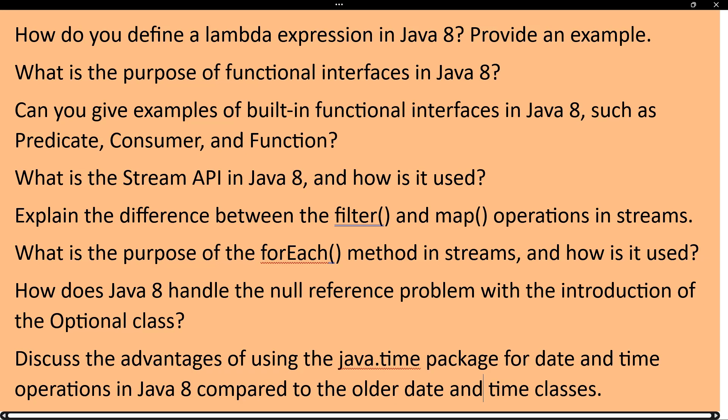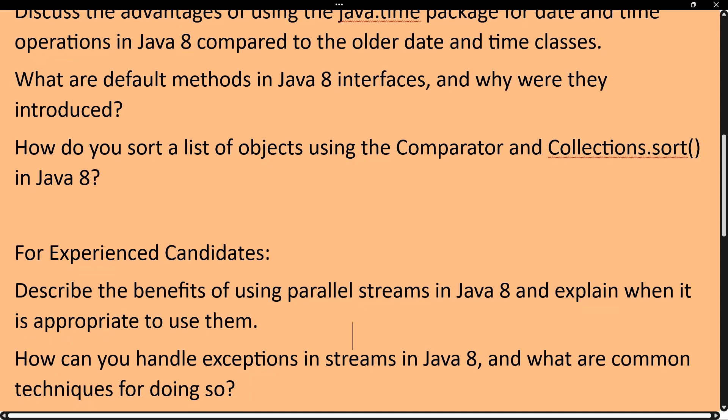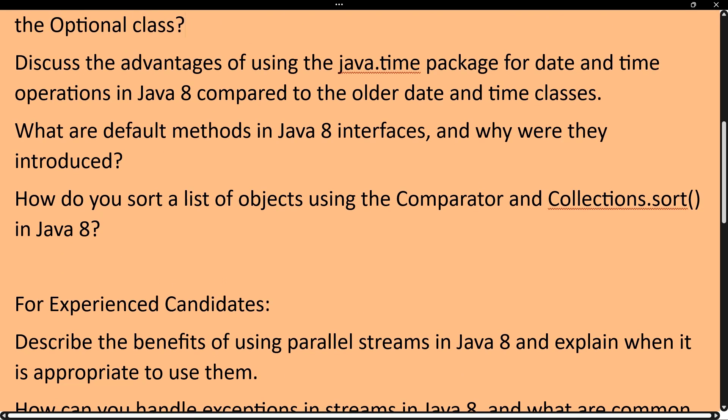The next question is: how does Java 8 handle the null reference problem with the introduction of the Optional class? The Optional class is a feature that handles null values and null references — can you explain how it works or have you used it? The next question is: discuss the advantages of using the java.time package for date and time operations in Java 8 compared to the older date and time classes — what are the differences and advantages?